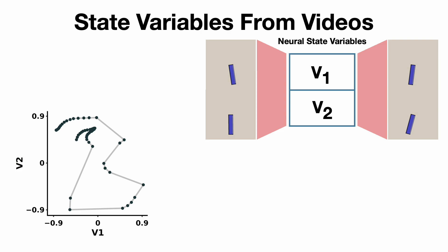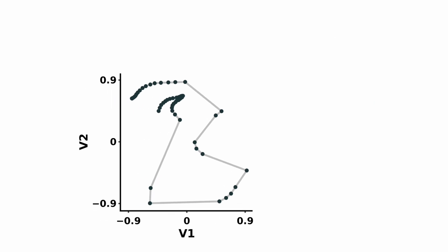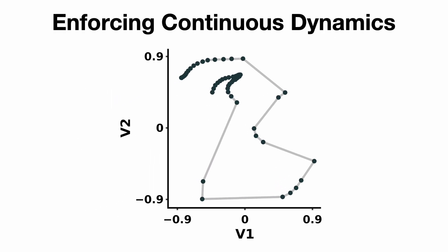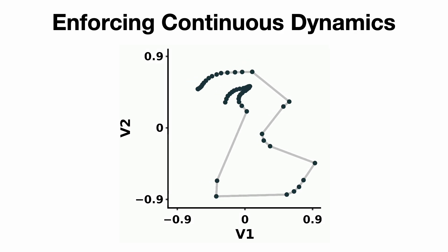To address this, we introduce smoothness constraints to encourage continuous dynamics without relying on any physical priors. Specifically, we minimize the distance between temporal neighboring states. However, without additional measures, this constraint alone could cause all states to collapse into a single point.